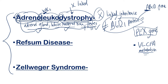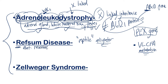For Refsum disease, when you see Refsum you need to immediately think of reptile. Refsum kind of sounds like reptile, so I think of something like an alligator. Starting with the inheritance: adrenoleukodystrophy was X-linked, but Refsum disease is autosomal recessive. That's pretty easy to remember because there's an R in Refsum, and autosomal recessive also starts with an R.